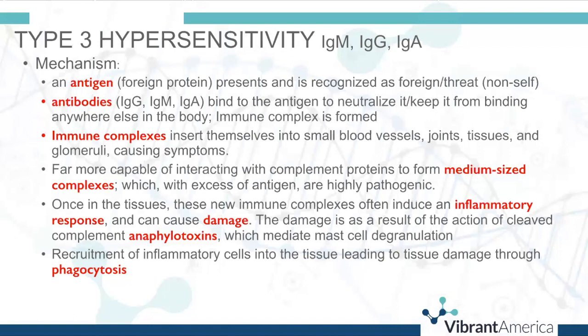Antibodies are produced specific to an antigen and bind to it to neutralize it. By binding, they prevent it from binding to anything else. An immune complex — an antibody and antigen bound together — is formed. These immune complexes can insert themselves into small blood vessels, joints, tissues, and glomeruli in the kidney, causing systemic inflammatory symptoms. IgG primarily does this; to some extent IgM. IgA does not form these immune complexes in the same way.